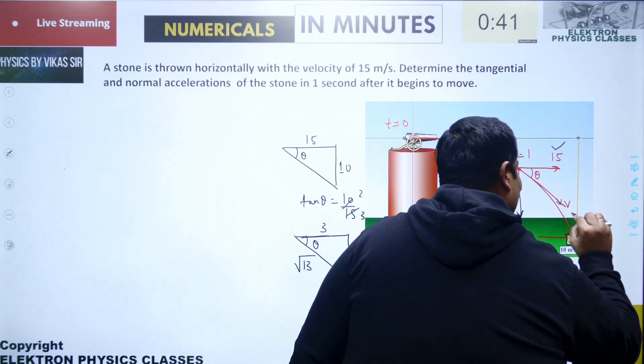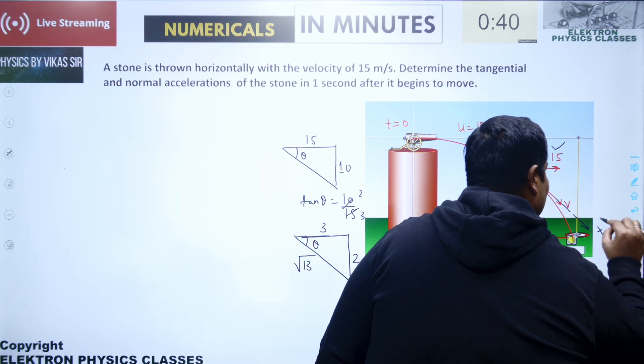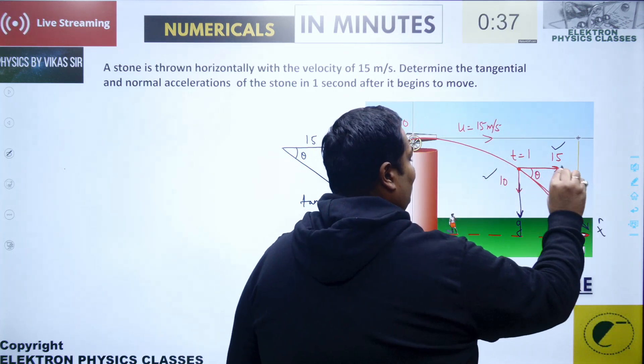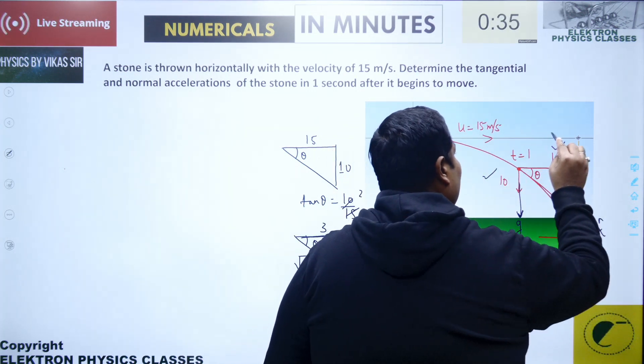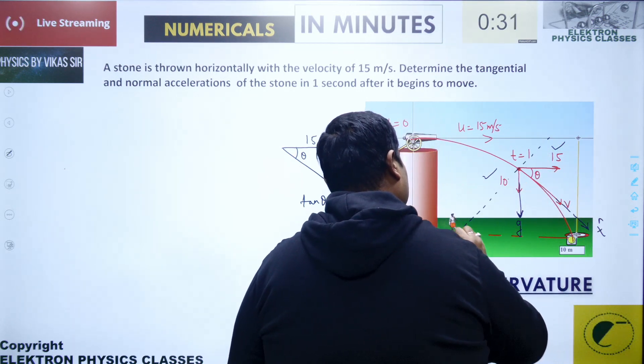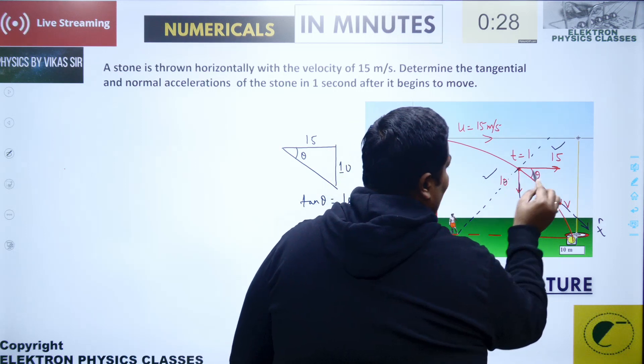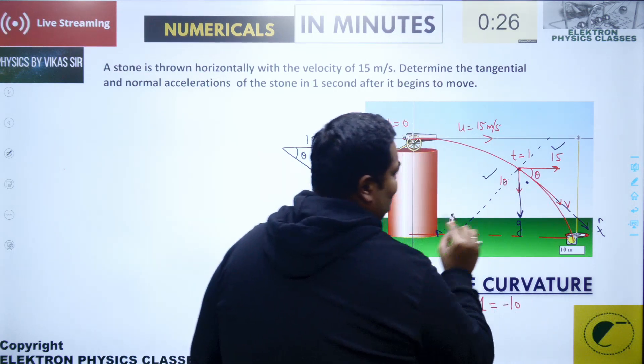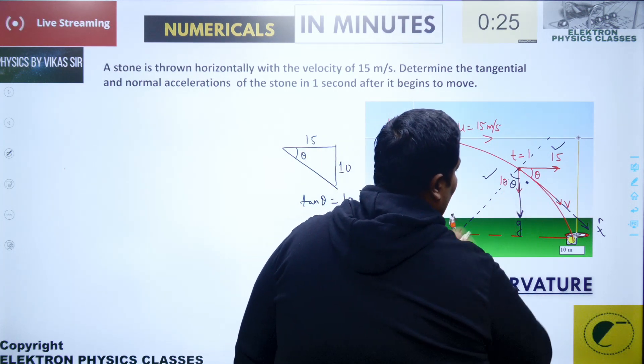This direction is the tangent axis. If I resolve g, I'll get the tangential component. And this is the normal axis. The angle is needed. This is theta, so this is 90 minus theta. This angle again becomes theta.